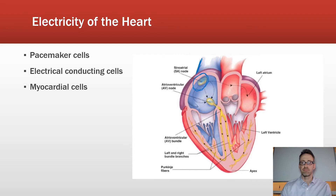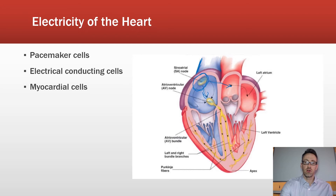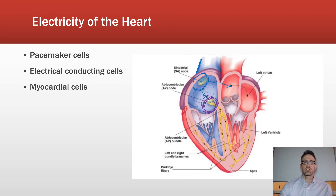When the SA node fires, it sends an electrical signal through both atria simultaneously — right and left — and that electrical signal excites the cardiac muscle to contract. As the electrical current moves through the atrial tissue, it converges at the AV node, located in the inferior aspect near the atrial septum.